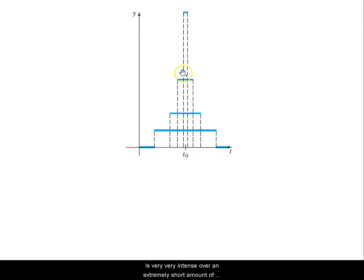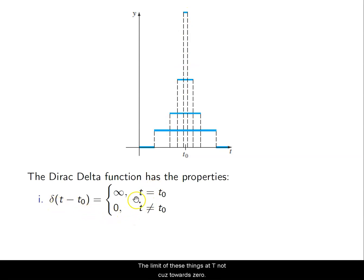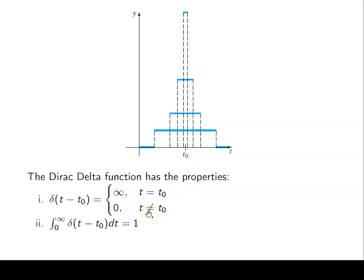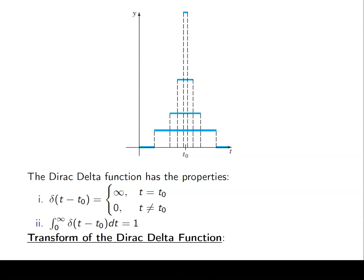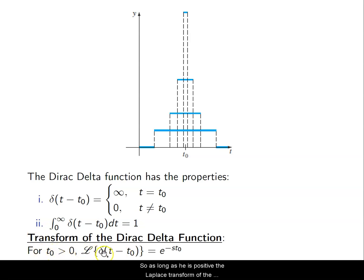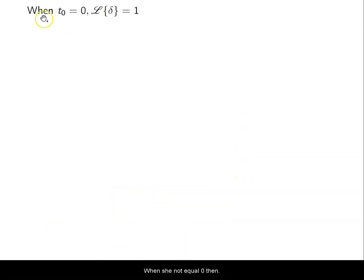As the interval goes toward zero at t-naught, if I'm not at my value of interest I have nothing — I'm zero. The integral over the Dirac-Delta function equals 1, or you can think of that as 100% of the impulse. The Laplace transform of the Dirac-Delta function centered at t-naught is just e to the negative s times t-naught, for t positive. When t-naught equals zero, the Laplace transform equals 1.